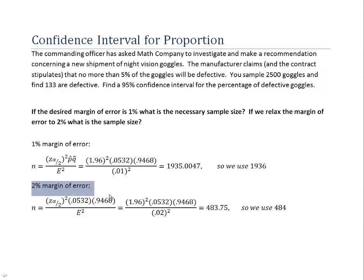Going back and plugging the appropriate values into the formula, this time we get 483.75, so we round that up to 484. So that's saying that to have a 2% margin of error in our 95% confidence interval, we would need to have 484 goggles in our sample.